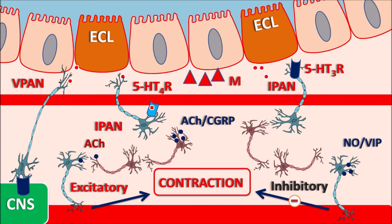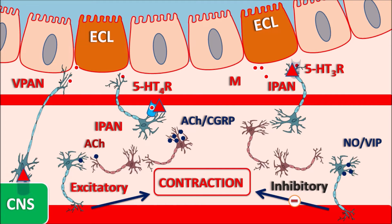Metoclopramide acts as an antagonist at the 5-HT3 receptors, blocking them and inhibiting the descending inhibitory motor neurons. It also acts as an agonist at the 5-HT4 receptors, increasing the release of acetylcholine which promotes contraction and prokinetic activity. Additionally, metoclopramide blocks the D2 receptors, which are responsible for inhibition of acetylcholine release — when these are blocked, more acetylcholine is released, resulting in increased contraction of GI smooth muscle.